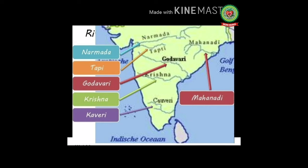Some of the rivers of this region are the Mahanadi, Krishna, Godavari, Kaveri, Tapi, and Narmada. These rivers are rain-fed or seasonal rivers.